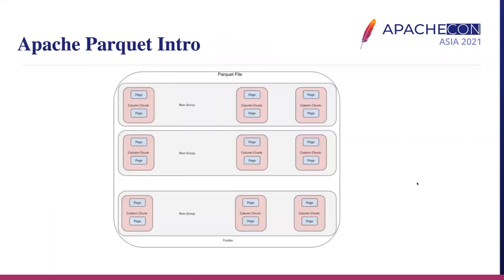Let's zoom in on Apache Parquet for a little more detail to build up context. Parquet is a column storage file format. The data in the same columns will be put together, which makes data analytics faster because they can retrieve column data altogether. Meanwhile, the file size is smaller because values from the same column usually have a lot of similarities, making encoding and compression more efficient. A Parquet file is divided into different row groups, each row group into column chunks, and each column chunk is further divided into pages. Each page is the unit for encoding and compression.